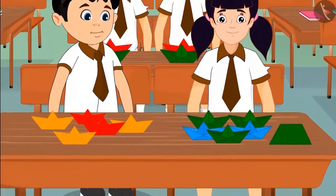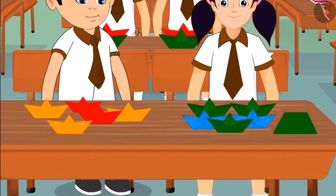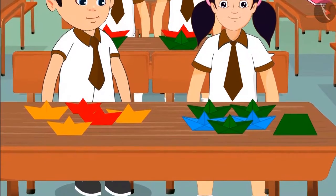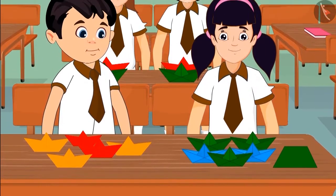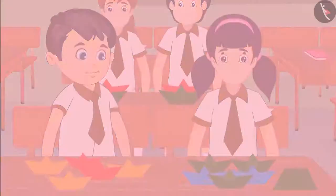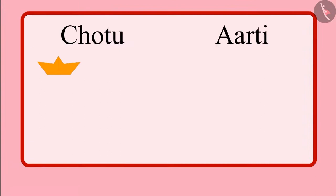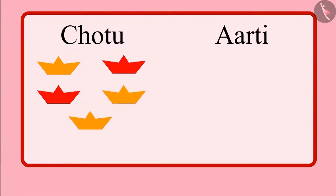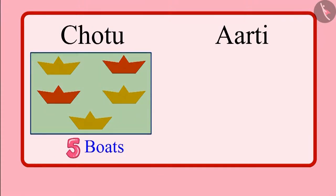Come on children, let us see how many boats Chotu and Aarti have made in total. 1, 2, 3, 4, 5. So Chotu made 5 boats.